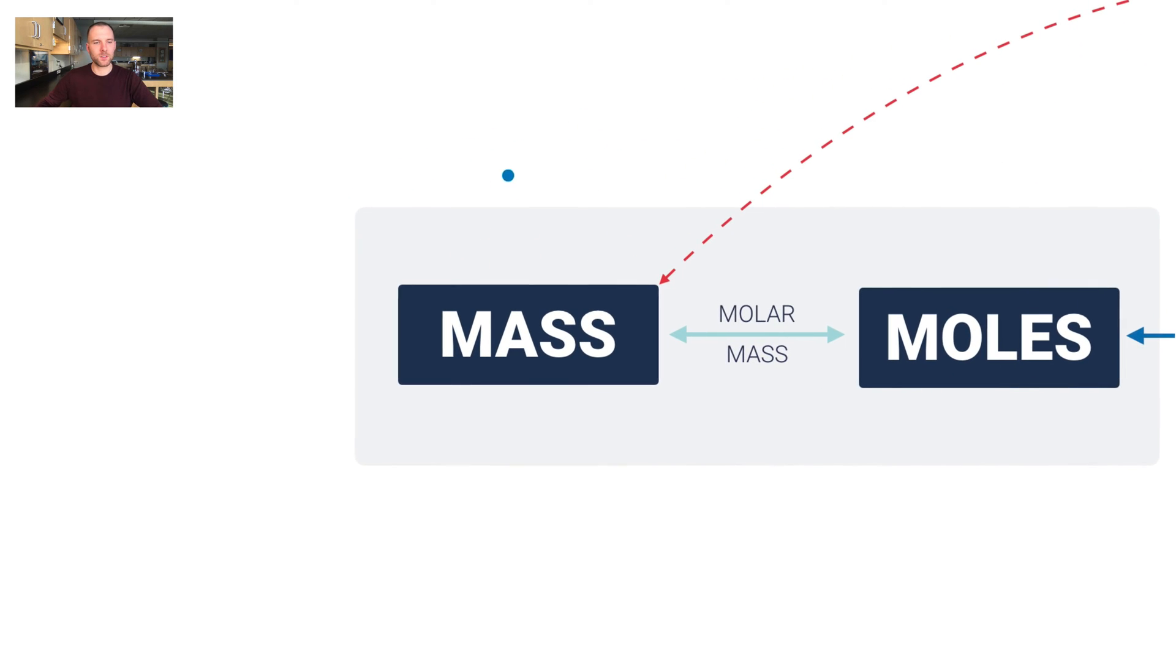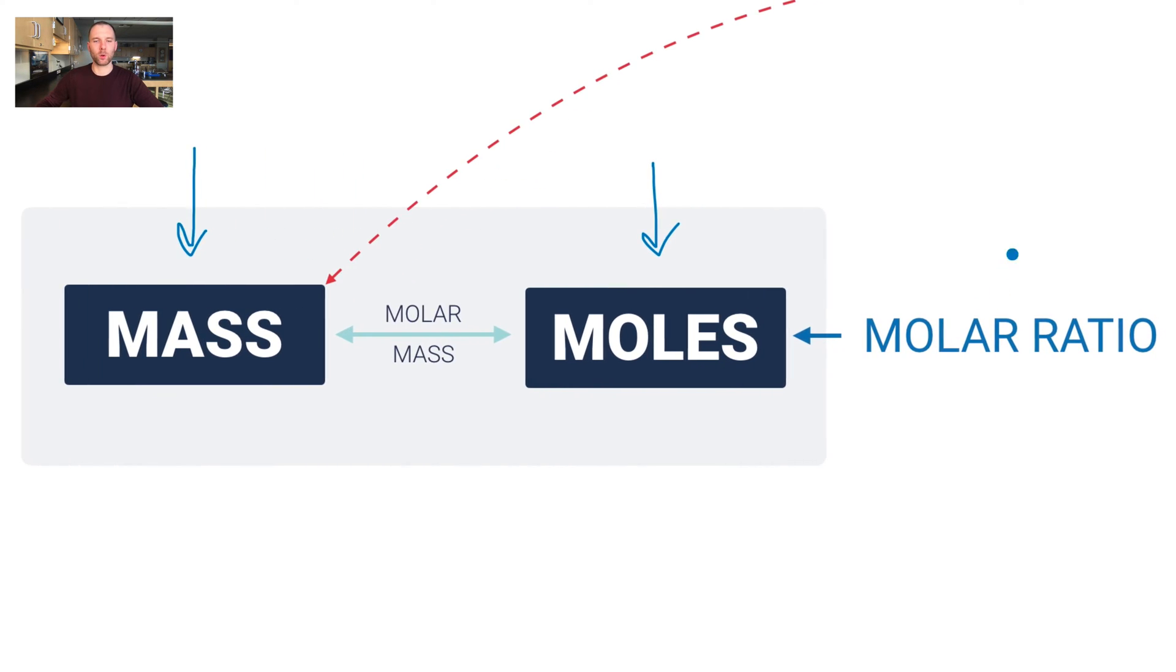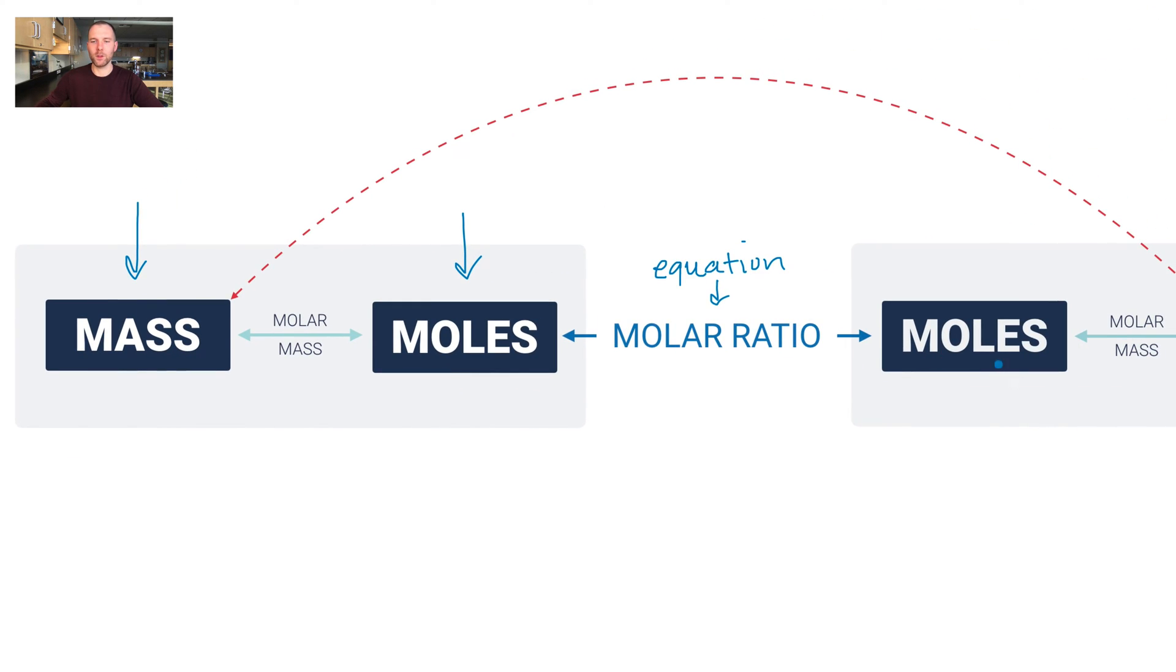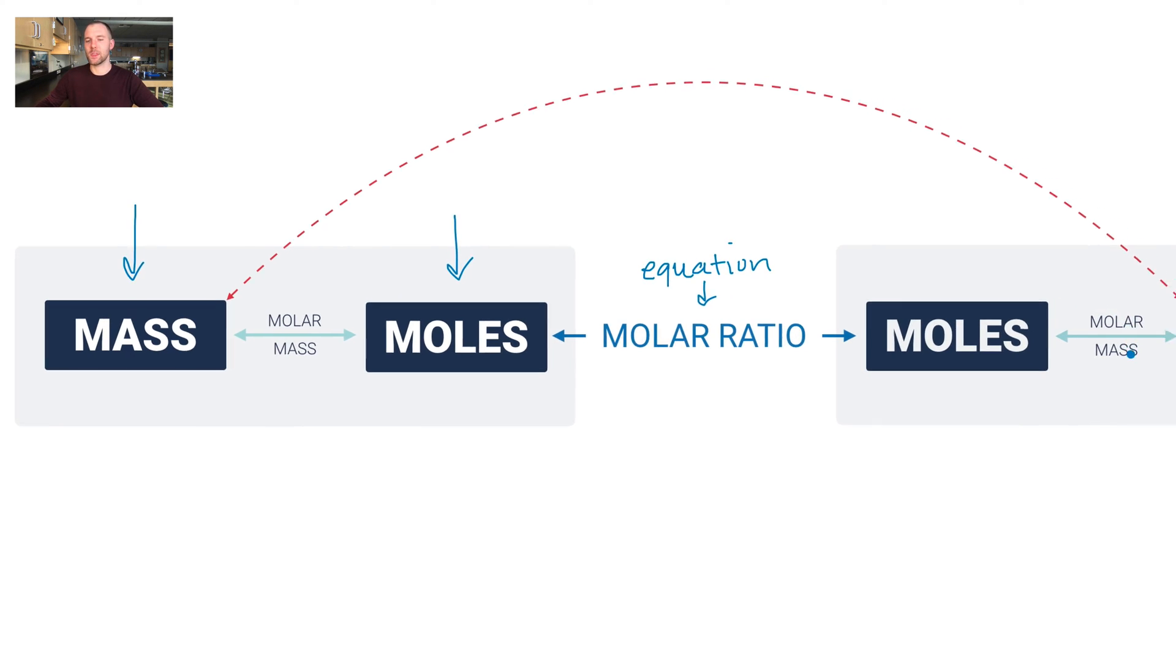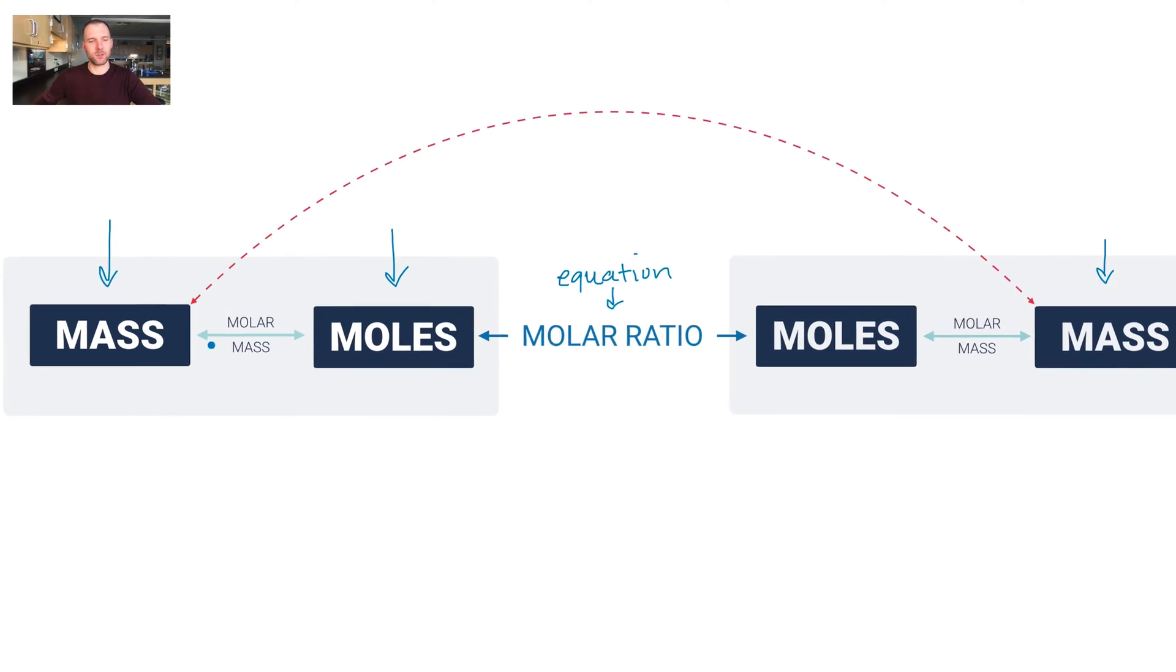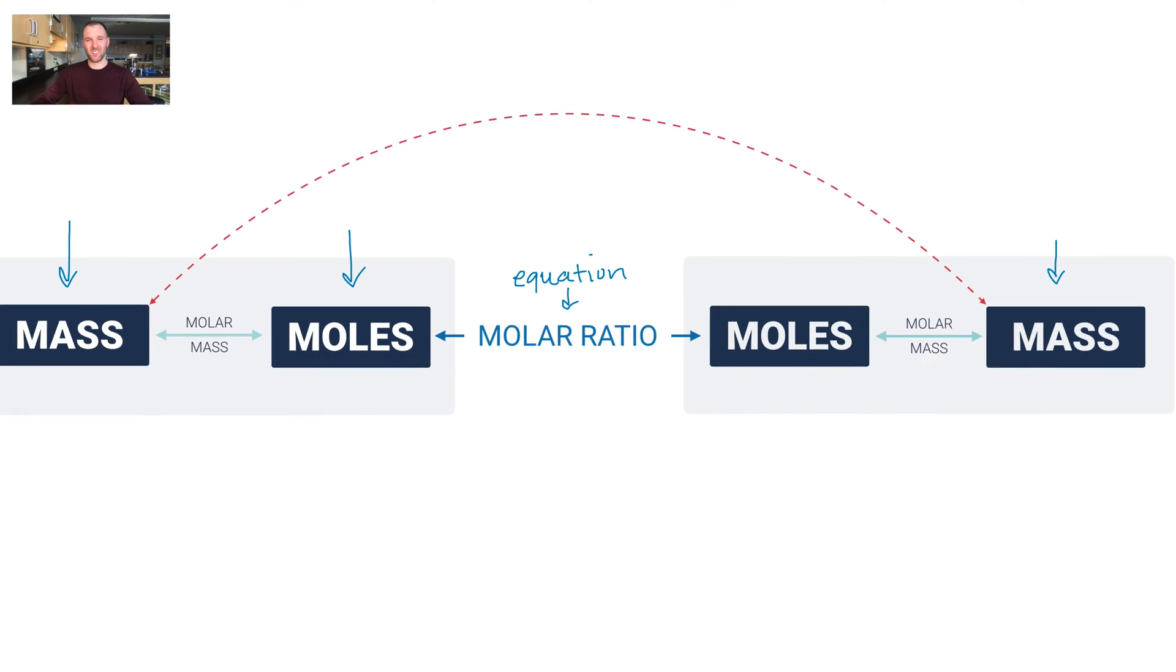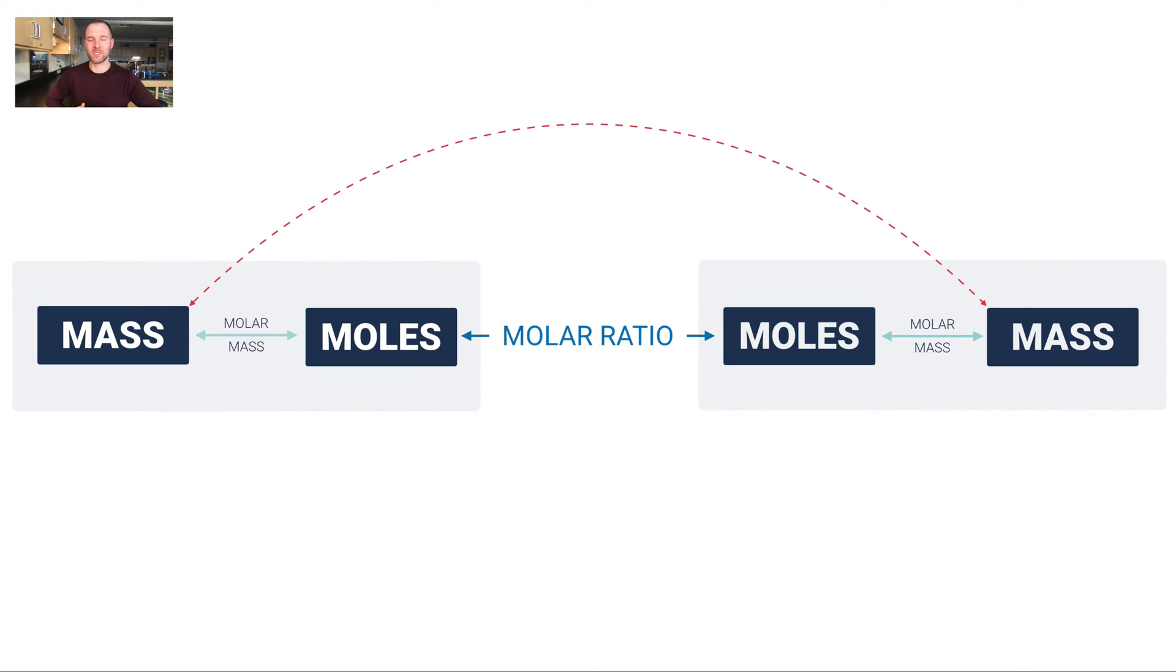You can see that this is going to be a theme that develops. You're going to start with a mass of some substance that's in an equation, and you would find the molar mass of that substance and use that to convert to moles of the substance. Once you're in moles of one substance, you can simply use the molar ratio from the balanced equation to determine the moles of the new substance. And then once you have the moles of the new substance, you use that substance's molar mass. So the molar mass, the molar ratio, and then finally one more molar mass but for a different substance. You're going to see that pattern develops quite a bit as you do these mass-to-mass stoichiometry problems.